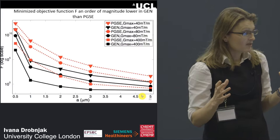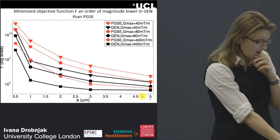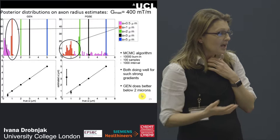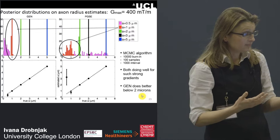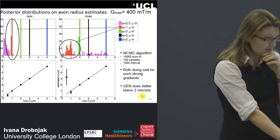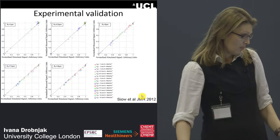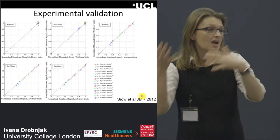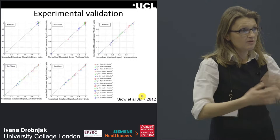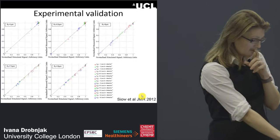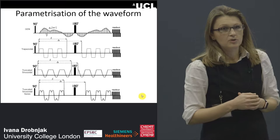Looking at the objective function, the optimized generalized waveforms provided an order of magnitude lower objective function than the standard PGSE. When examining accuracy and precision of axon diameter and other model parameters, the optimized sequences also gave much better estimates than PGSE. We experimentally validated these waveforms on our preclinical scanner and achieved an excellent match between simulation predictions and experimental results, also reproducing the axon diameter results.